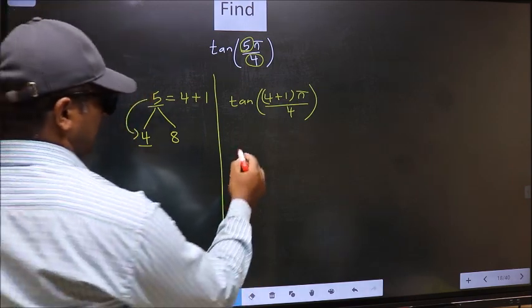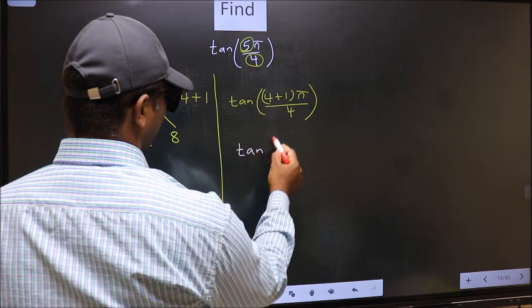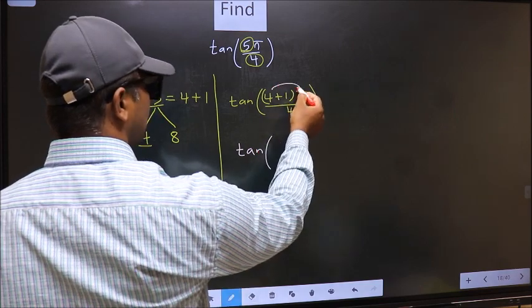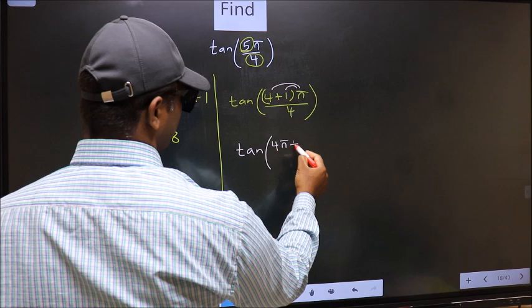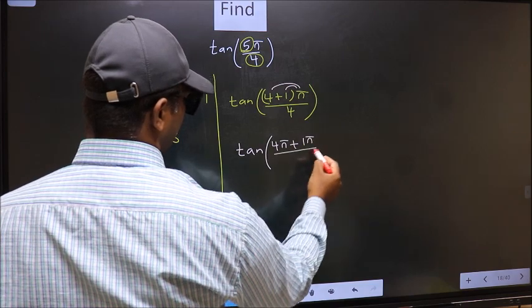Next, tan—now you should open the brackets. You get 4π plus 1π, all divided by 4.